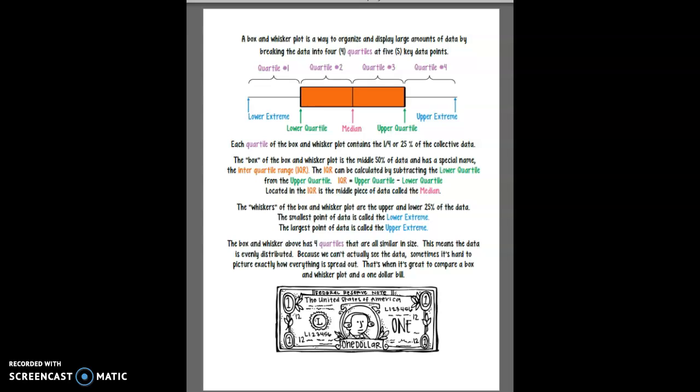This first page basically explains what a box and whisker plot is. A box and whisker plot is a way to organize and display large amounts of data by breaking the data into four quartiles.